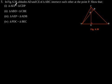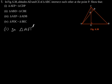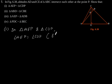Exercise 6.3, question number 7. In figure 6.38, altitudes AD and CE of triangle ABC intersect each other at point P. Show that triangle AEP is similar to triangle CDP. Considering triangle AEP and triangle CDP: angle AEP is equal to angle CDP, both are 90 degrees.